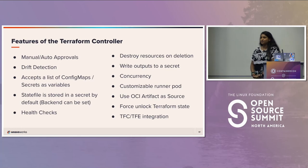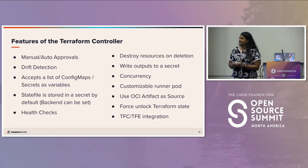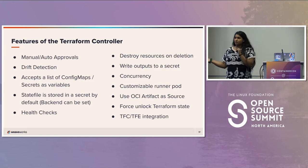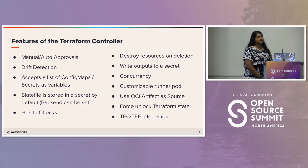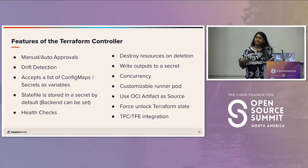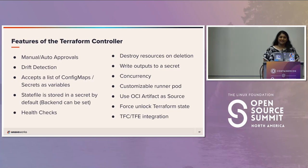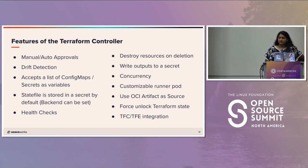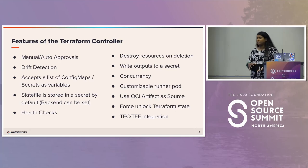These are some of the features of the Terraform controller — it's continuously being worked on and added to. You can do manual and auto approvals. Drift detection. It can accept a list of ConfigMaps and secrets as variables. The state file is stored in a secret by default, but you can set your own backend — whether you're using an S3 bucket, Terraform Cloud, or Terraform Enterprise. It also has health checks enabled, and you can do 'depends on' — telling one module to wait for the other to complete, waiting until the health check passes before applying the second one.